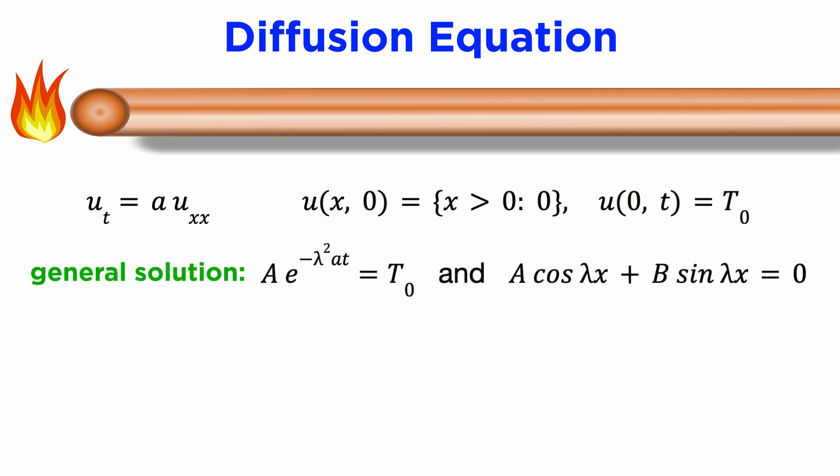If we try to apply these conditions to our general solution, we end up with a problem. It seems like we can't find any constants a and b to satisfy the boundary conditions. The reason for this is that our constant lambda previously depended on our problem having an intrinsic length scale, which we often took as the length of the rod, in order to enforce some periodicity in the solution. But here, since our rod is infinitely long, we don't have any length scales to use, and so we can't continue.